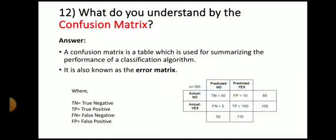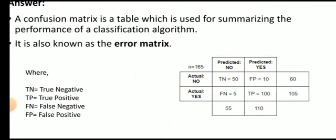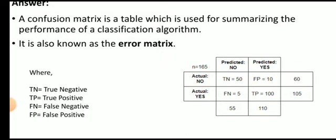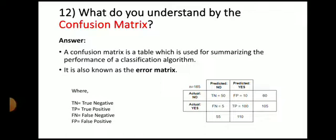Next question: what do you understand by confusion matrix? A confusion matrix is a table used for summarizing the performance of a classification algorithm, also known as an error matrix. It contains four elements: TN (true negative), TP (true positive), FN (false negative), and FP (false positive).